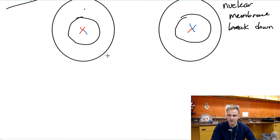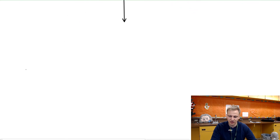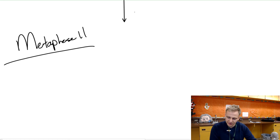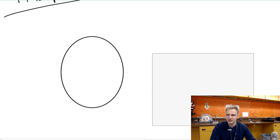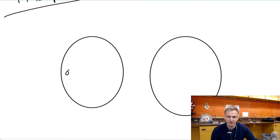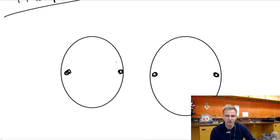That breakdown allows us to advance to metaphase 2, where everything lines up in the middle again — just like in mitosis. In metaphase 2, the nuclear membrane is completely dissolved in both cells, and the spindle fibers from the centrosomes at each end start to pull apart the new chromosomes in each of the two cells.